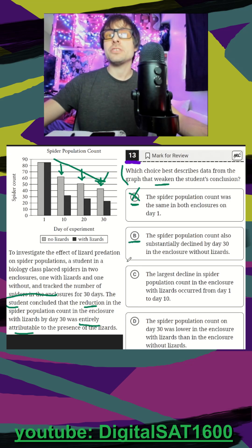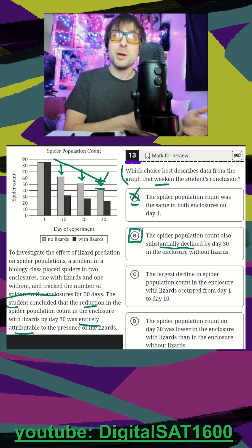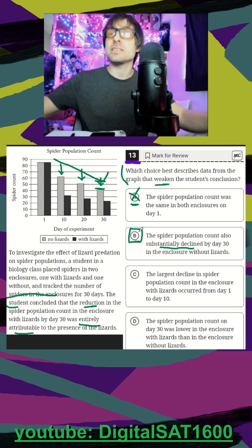And B, the spider population count also substantially declined, look where we end up here, by day 30 in the enclosure without lizards. That definitely goes against the student because they're saying the reduction is only happening because there's lizards. But there also is a huge reduction in the ones without lizards, which B is highlighting.